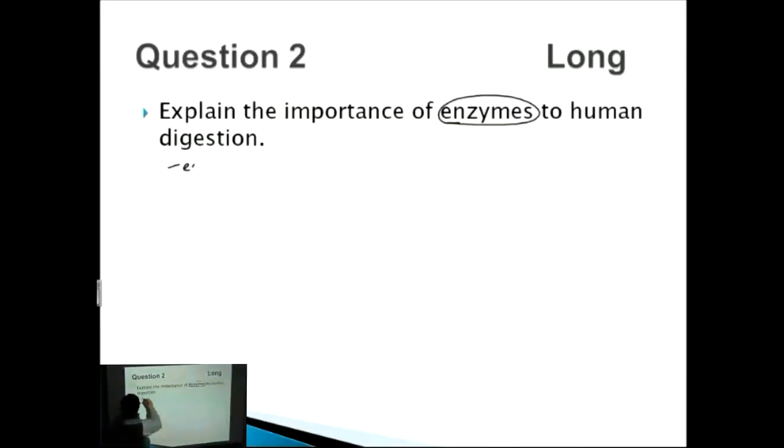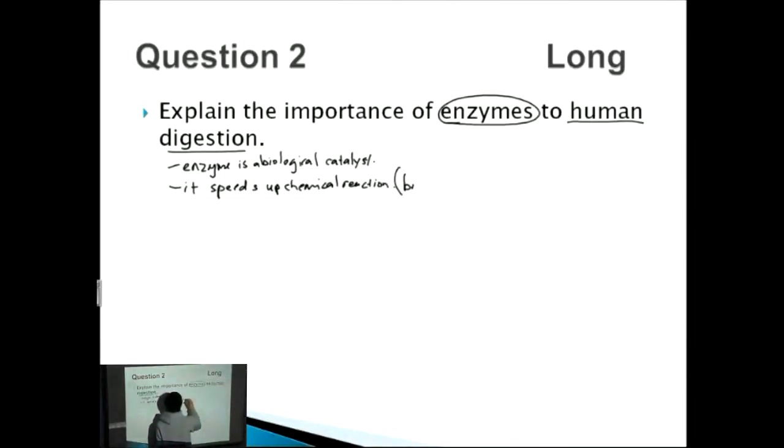So enzyme is a biological catalyst. What does it do? It speeds up chemical reaction. In this case we can even relate it to the question, so to human digestion, so it speeds up chemical reaction and then put in bracket breakdown of food.